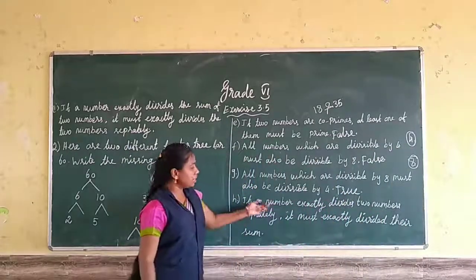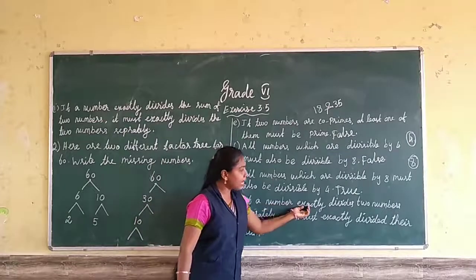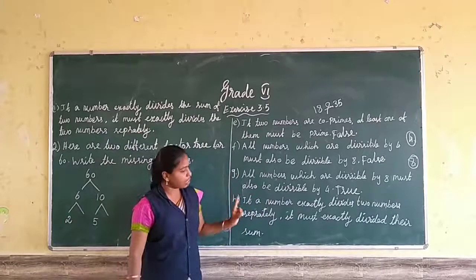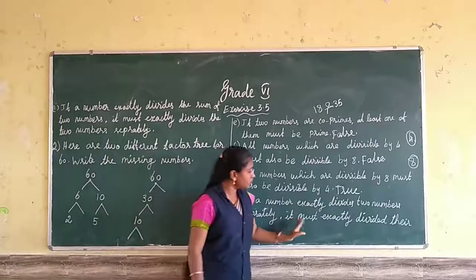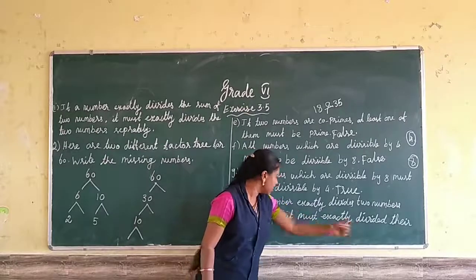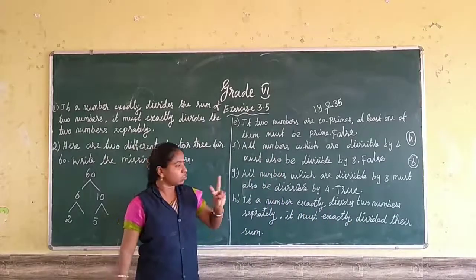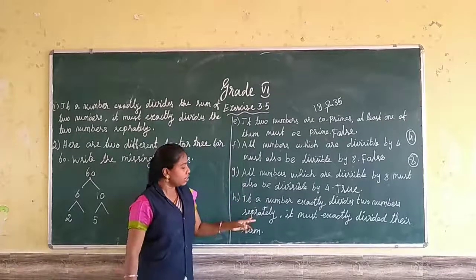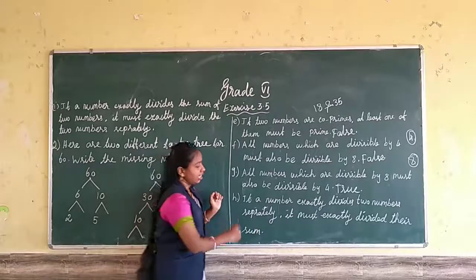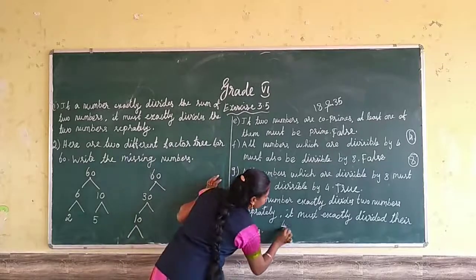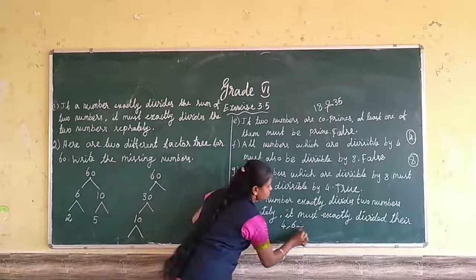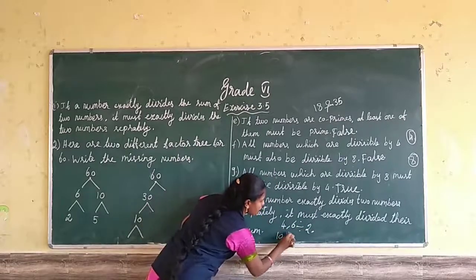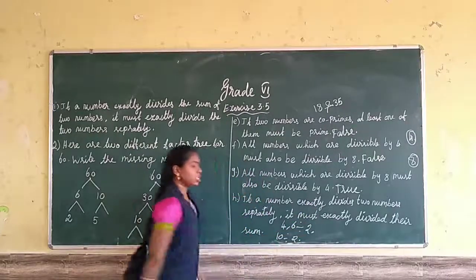Next statement: if a number exactly divides two numbers separately, it must exactly divide their sum also. That is, one number divides two numbers separately, and if you add those two numbers, the sum is also divisible by that number. For example, take 4 and 6 — both are divisible by 2. If you add 4 and 6 you get 10, and 10 is also divisible by 2. So this statement is true.